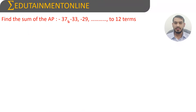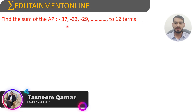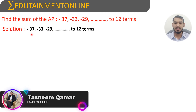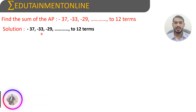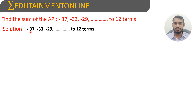Find the sum of the AP: -37, -33, -29, and so on up to 12 terms. The common difference is (-33) - (-37) and (-29) - (-33), which is 4. So the common difference d is 4.